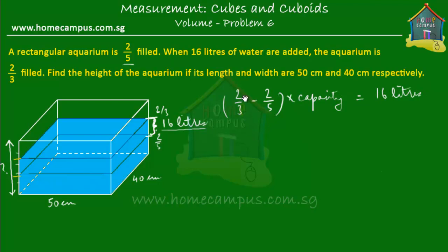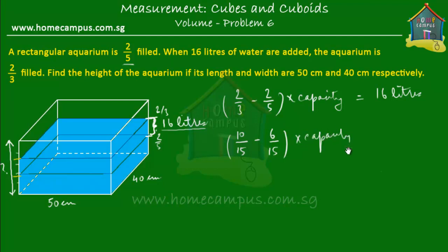To find 2/3 minus 2/5, we find a common denominator, which is 15. So 2/3 equals 10/15 and 2/5 equals 6/15. Therefore, 10/15 minus 6/15 of the capacity of the aquarium equals 16 liters. That gives us 4/15 of the capacity equals 16 liters.